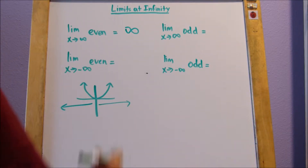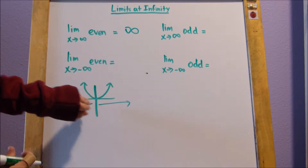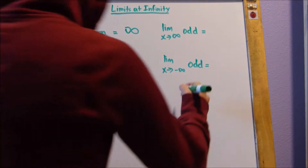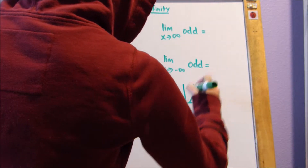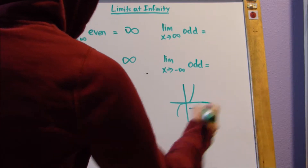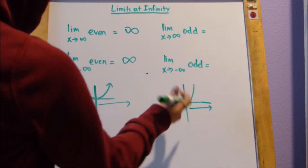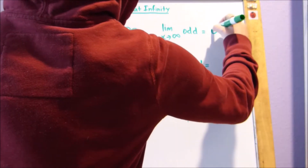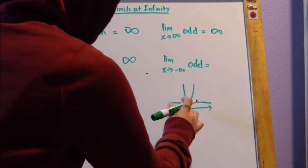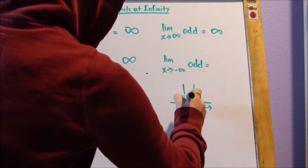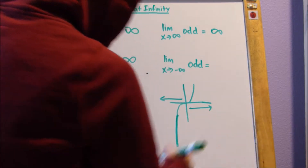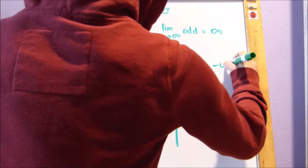Now if we look at x approaching negative infinity, because it's an even function, it's still going to be approaching infinity — it's still curved up, our y is still increasing. For our odd function, that's x cubed: as x approaches infinity, our y behavior is still increasing to infinity. But because of the definition of an odd function, as x approaches negative infinity, our y's are decreasing — they just keep decreasing. So the limit is negative infinity.